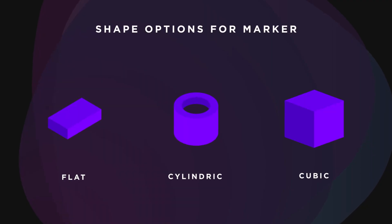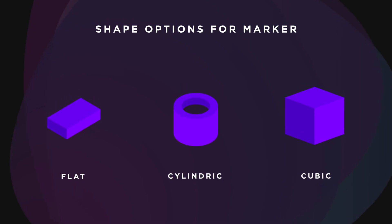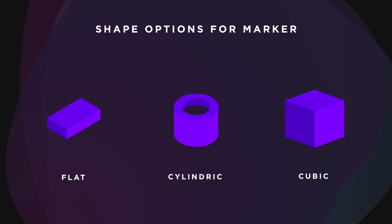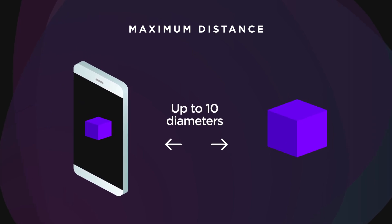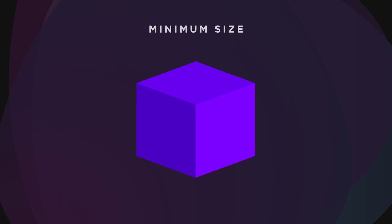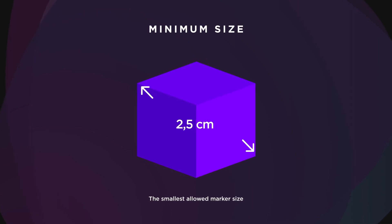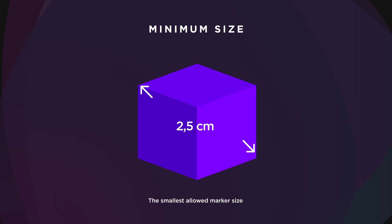The most important limitations of markers are shape, contrast, and size. A marker could be flat, cylindric, or cubic. Typically, the bigger and more contrasted markers show better stability in performance. The maximum distance from device to the marker is up to 10 diameters of the marker. The smallest allowed marker size is 2.5 cm in diagonal. You have to strictly avoid glossy markers, as when moving around, the camera reads the reflection as a constantly changing marker. In order to perform, the marker has to be in the field of camera view at all times, so users' movements and interaction with the AR experience are limited.